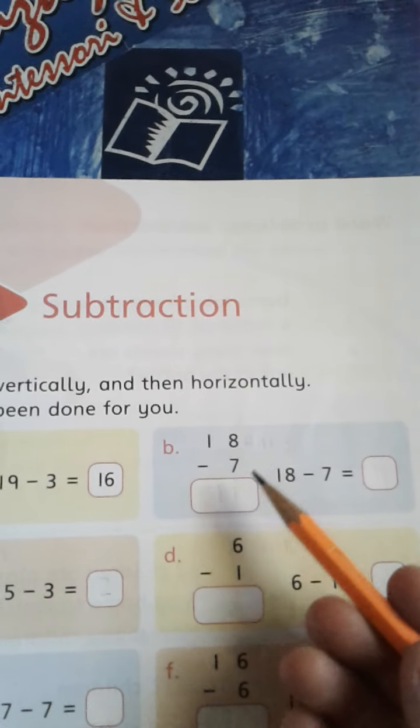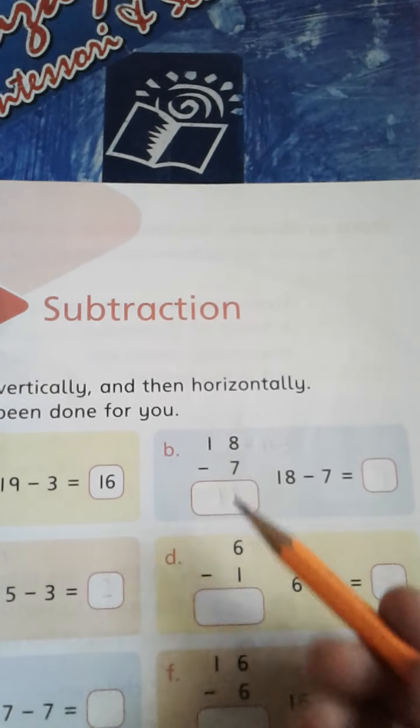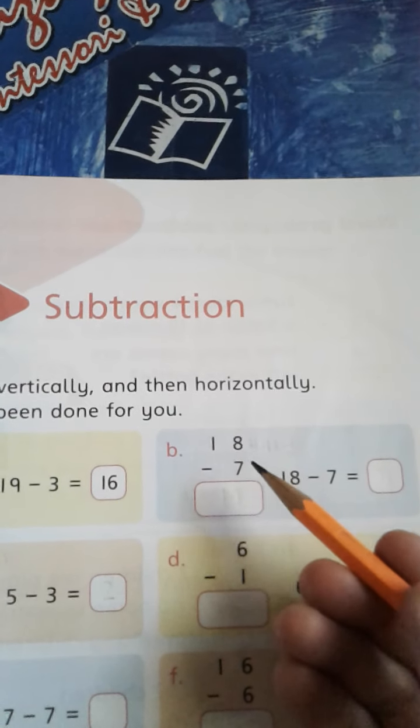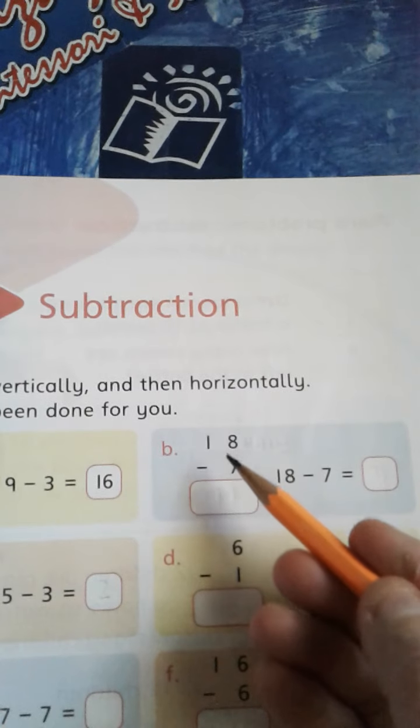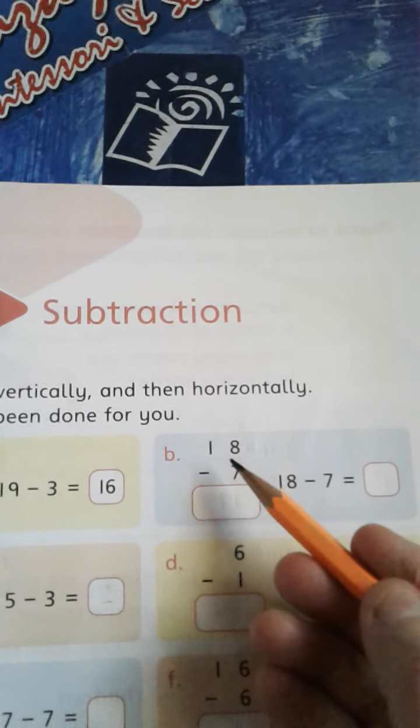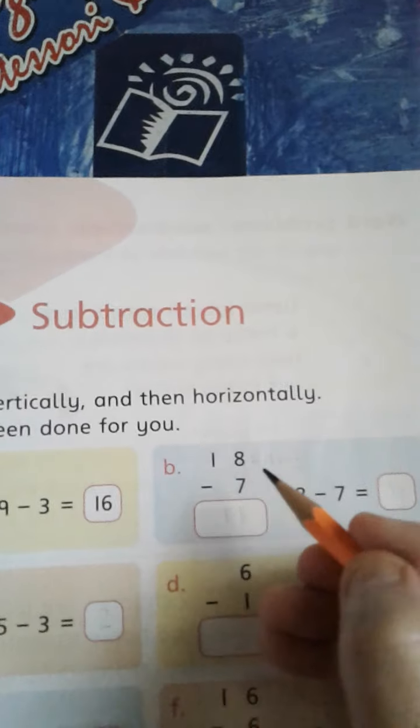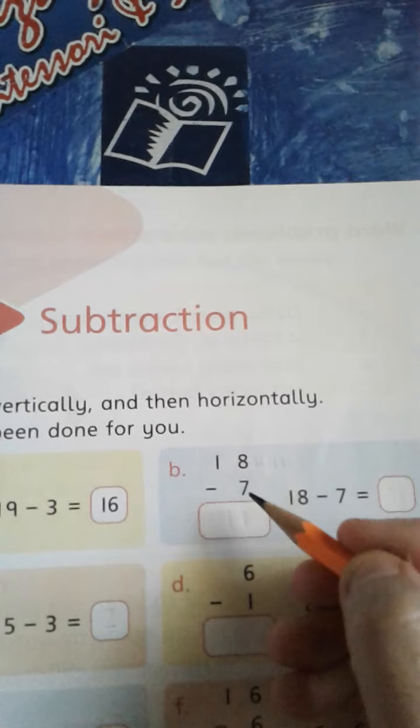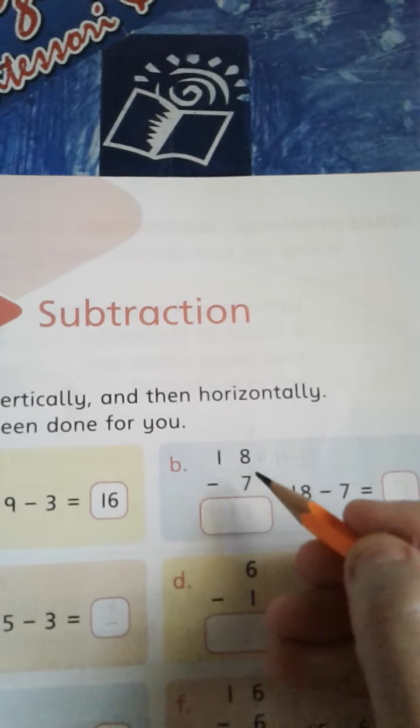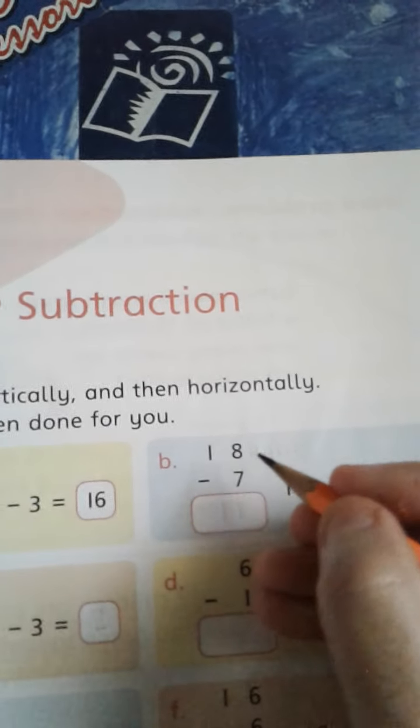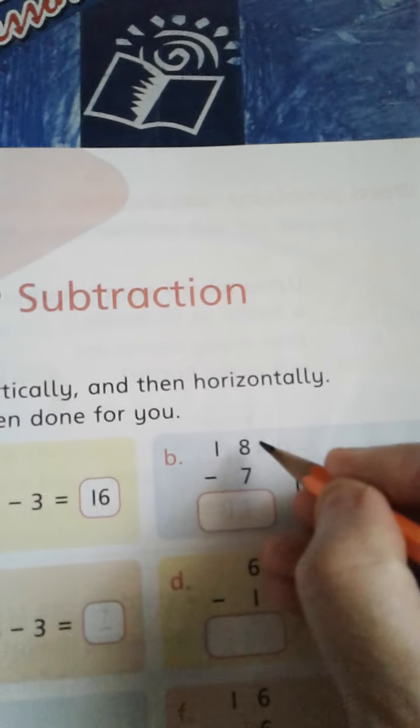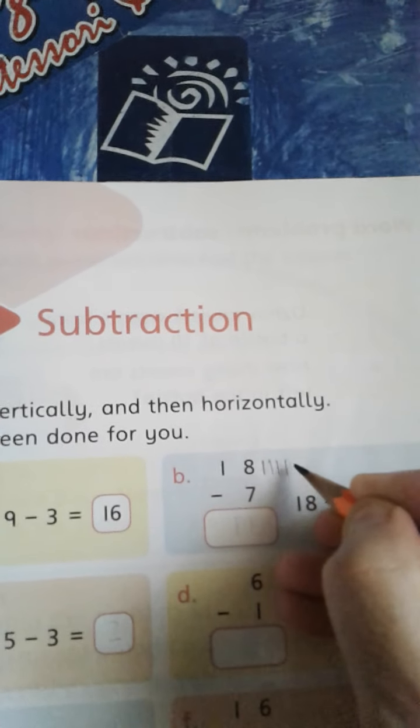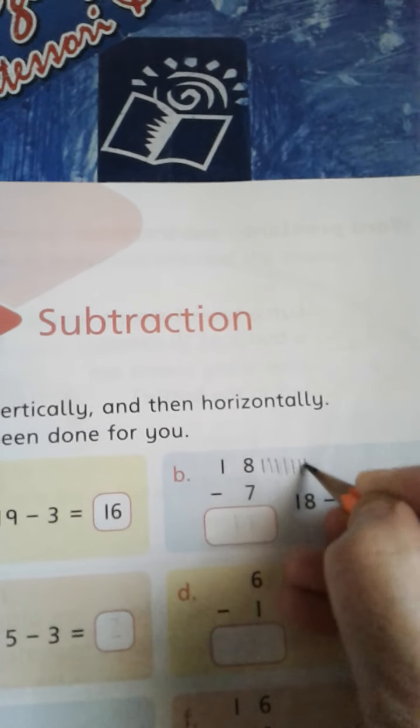So we have to subtract 7 from 18. Let's start from ones. We have to subtract 7 from 8, so draw and make 8 lines here: 1, 2, 3, 4, 5, 6, 7, 8.